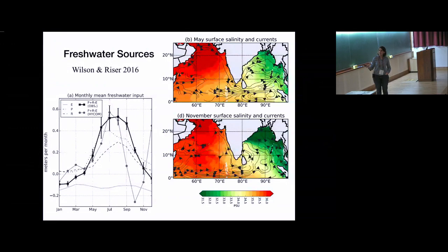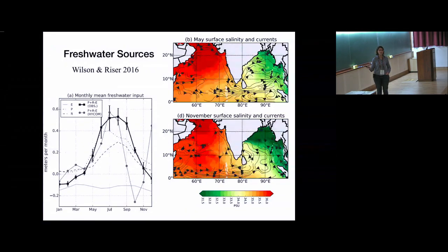Relative magnitudes of precipitation and river sources are about half and half. The minimum salinity would be expected after this period of enhanced freshwater flux — around May — which is what's plotted. The maximum freshwater in the bay arrives after all the monsoon precipitation and river input, so sometime in the late fall, which matches the November salinity plot showing that pattern clearly.